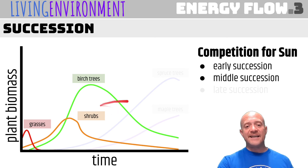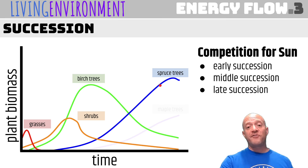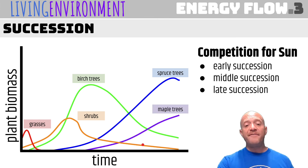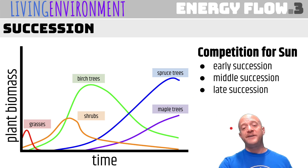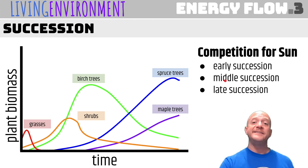Once you get to late succession — when you get a spruce tree, which is like a Christmas tree — a spruce tree will start crowding out and shading the other plants, and that's why their populations are going down. And finally, in late succession, you'll have something like a maple tree. If this graph were extended, the maple tree population or biomass would increase as the spruce trees were out-competed, so eventually you'll get to a population of predominantly maple trees.